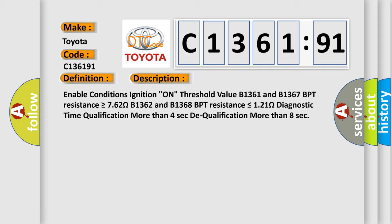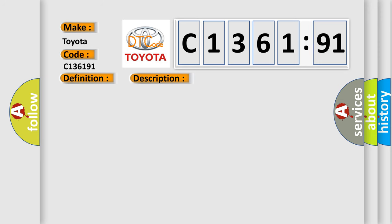And now this is a short description of this DTC code. Enable conditions: ignition on. Threshold values: B1361 and B1367 BPT resistance is greater than or equal to 762 ohms; B1362 and B1368 BPT resistance is less than or equal to 121 ohms. Diagnostic time qualification: more than 4 seconds. Dequalification: more than 8 seconds.